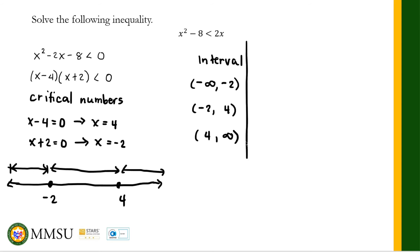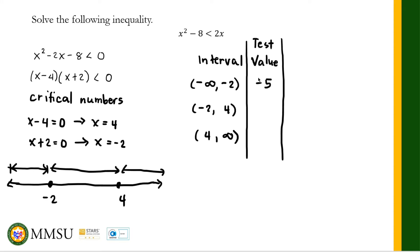Next, we look for a test value within each interval. For the first interval from negative infinity to negative 2, I will choose negative 5. For the second interval from negative 2 to positive 4, I will choose 0. For the third interval from positive 4 to positive infinity, I will choose positive 5.